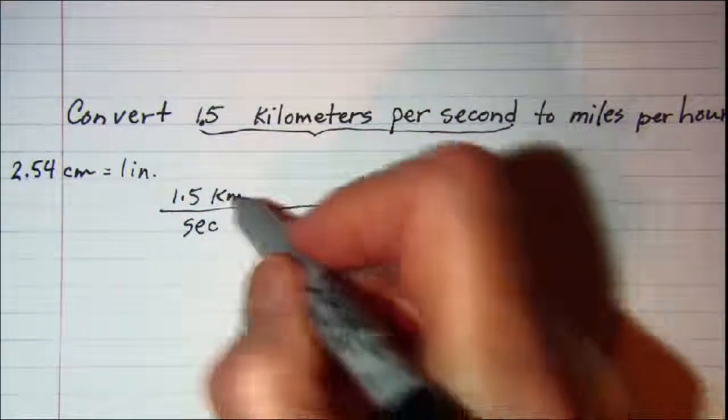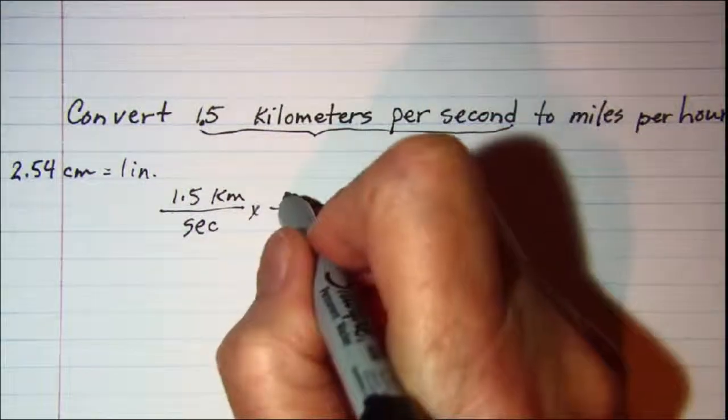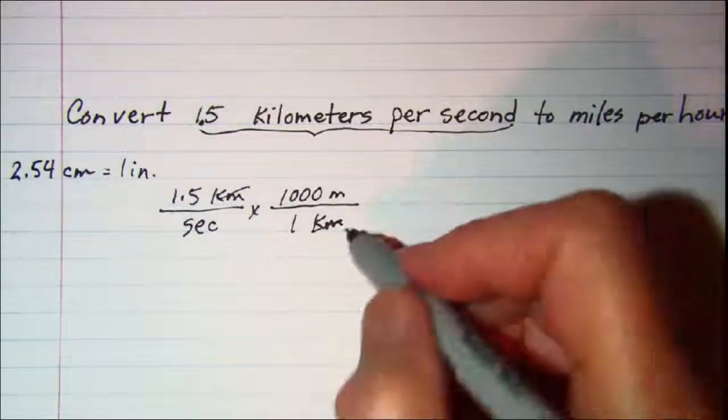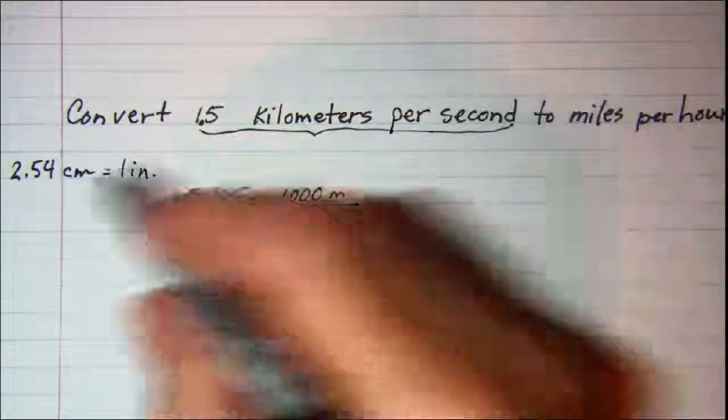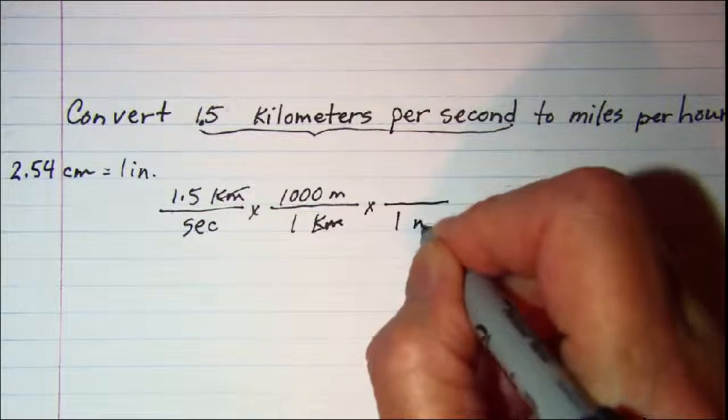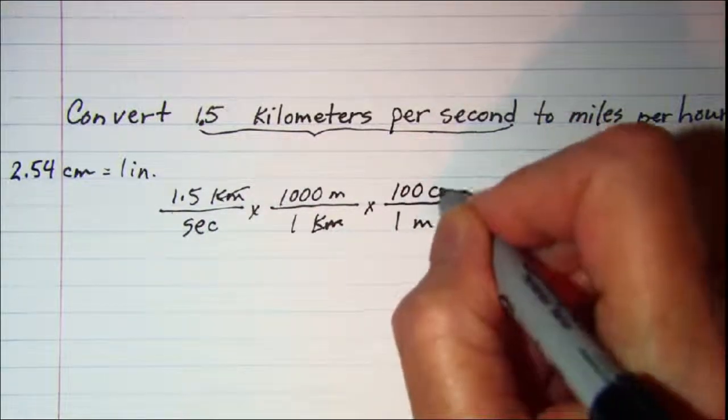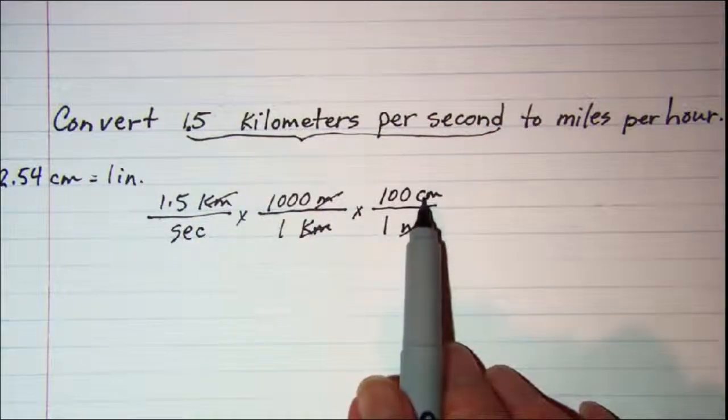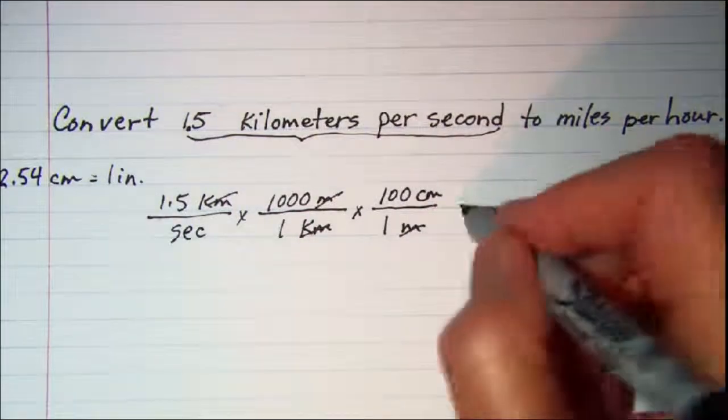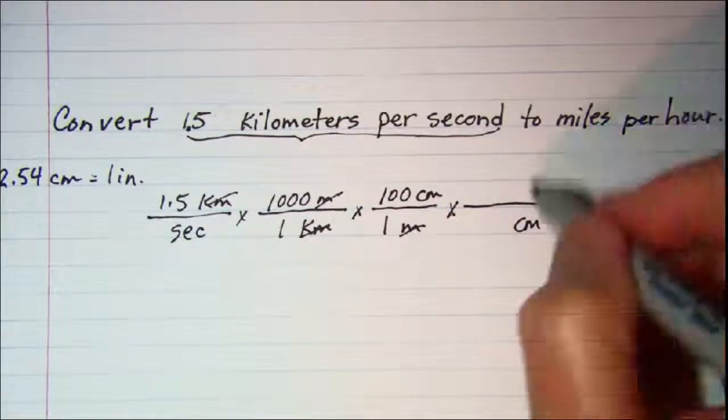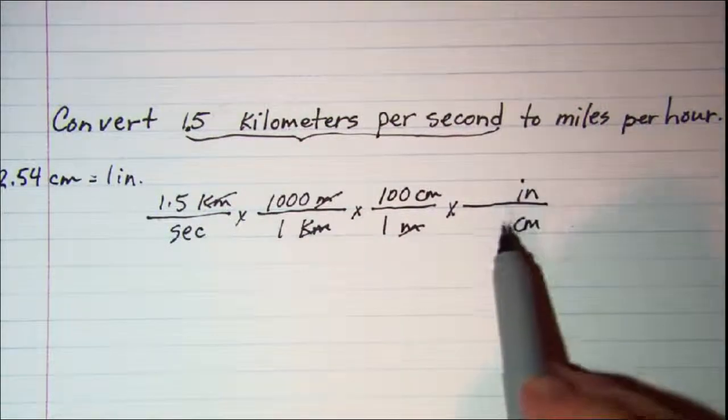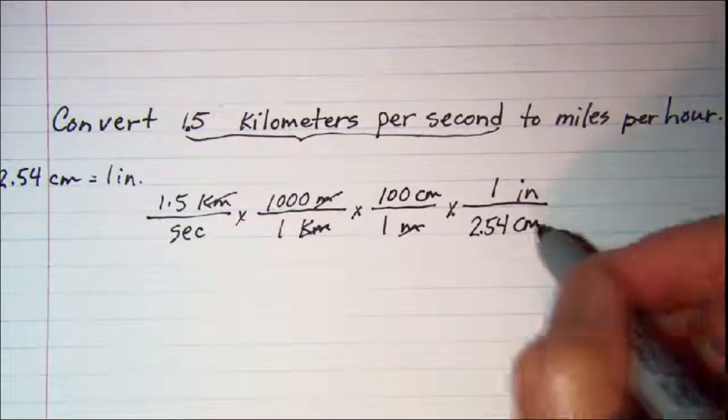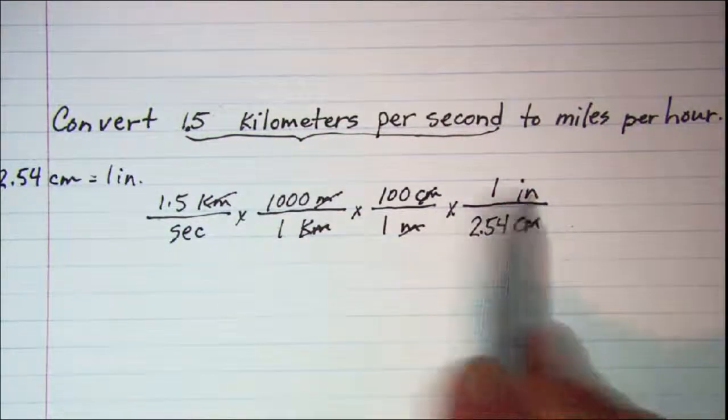Let's go to meters so 1 kilometer is the same as 1,000 meters and again this is a metric equivalent that you should know. Then we will go from meters to centimeters so 1 meter is 100 centimeters again another equivalence you should be familiar with. Now since I am in centimeters I can make the jump to English. So centimeters in the denominator and inches in the numerator. 2.54 centimeters equals 1 inch and my centimeters cancel. Now I am in inches per second.